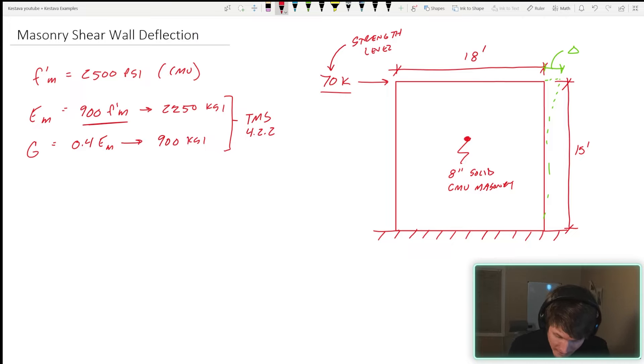Secondly, this story force of 70 kips is a strength level load even if you were doing an analysis in ASD. Yes, that's right. Per the ASCE section 12.8.6, it denotes that story drift needs to be determined based on strength level loads even if you're doing ASD analysis.